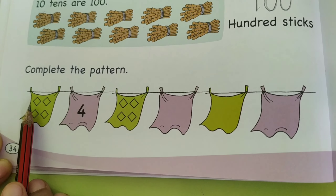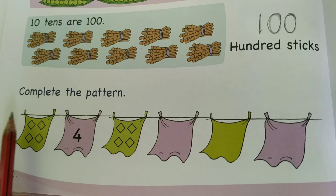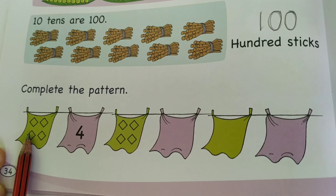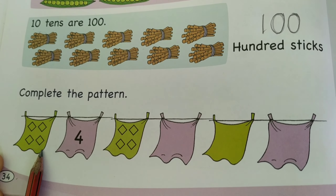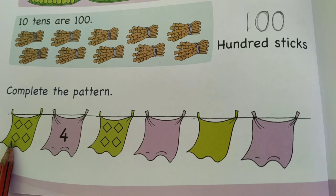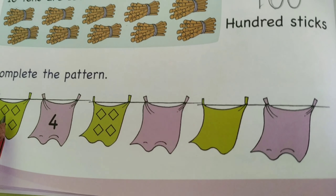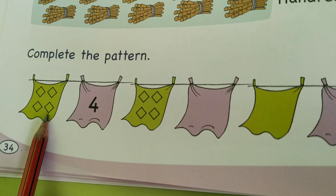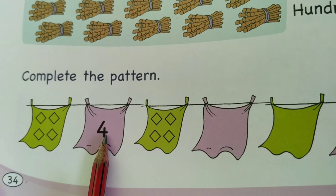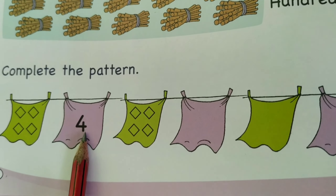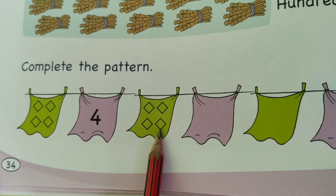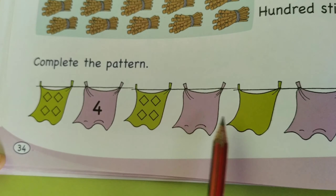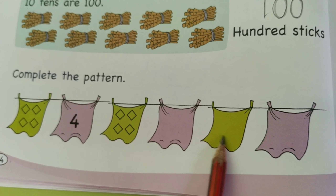This part will be your homework — complete the pattern. Look here: this is green color, some clothes are drying, and there are four diamond designs inside. The next number is four. Then next will be four diamond shapes. See the pattern, follow it, and complete these three.